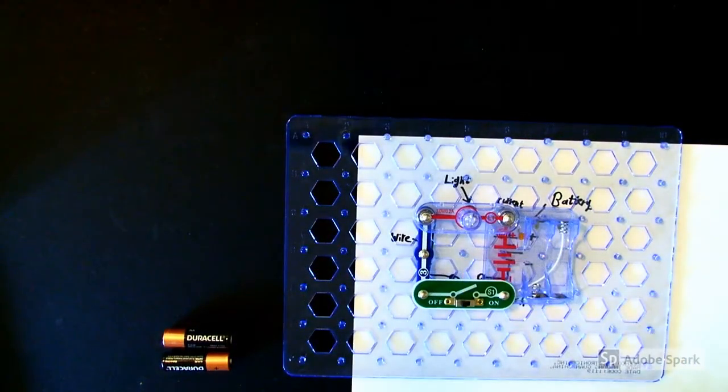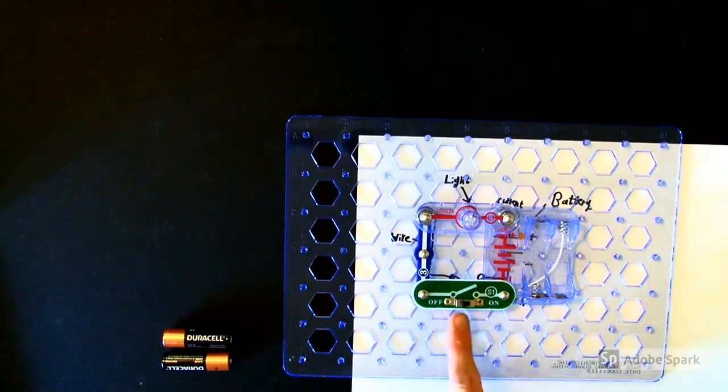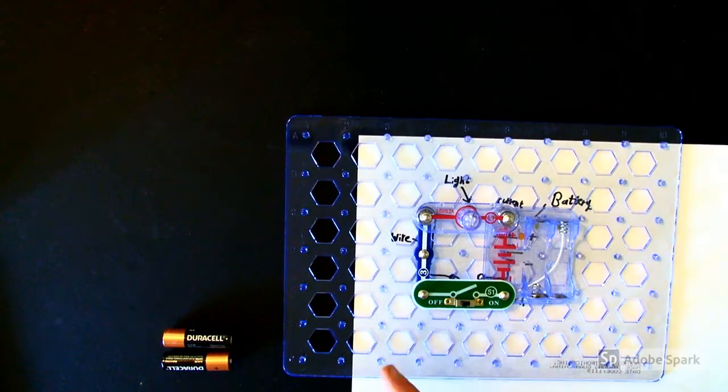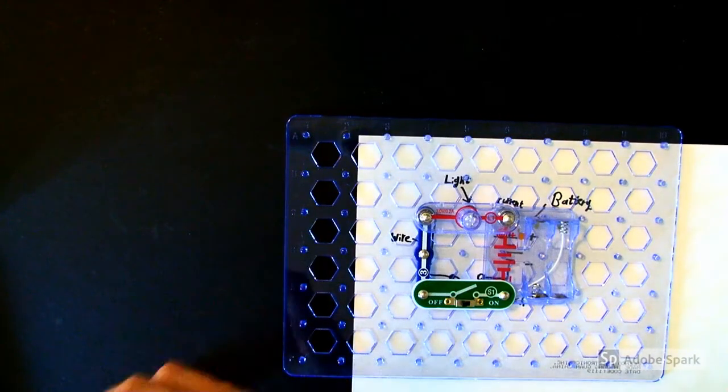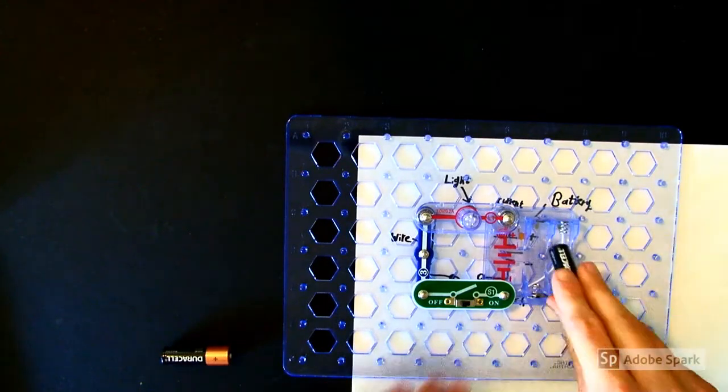Double checking my wiring, I have my battery, light, wire, and switch. My switch is in the off position. The last step in your circuit is to insert your batteries. Make sure the negative end of the battery matches up to the spring.